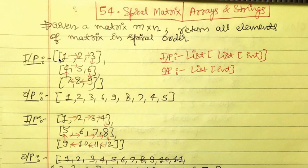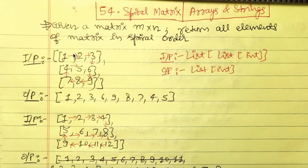For example, a 3x3 matrix: first row one two three, second row four five six, third row seven eight nine. The spiral order will be: start from the top-left — one two three — then going down six nine, then eight seven, then four five. So the spiral starts from the top-left corner, goes right, then down, then left, then up.